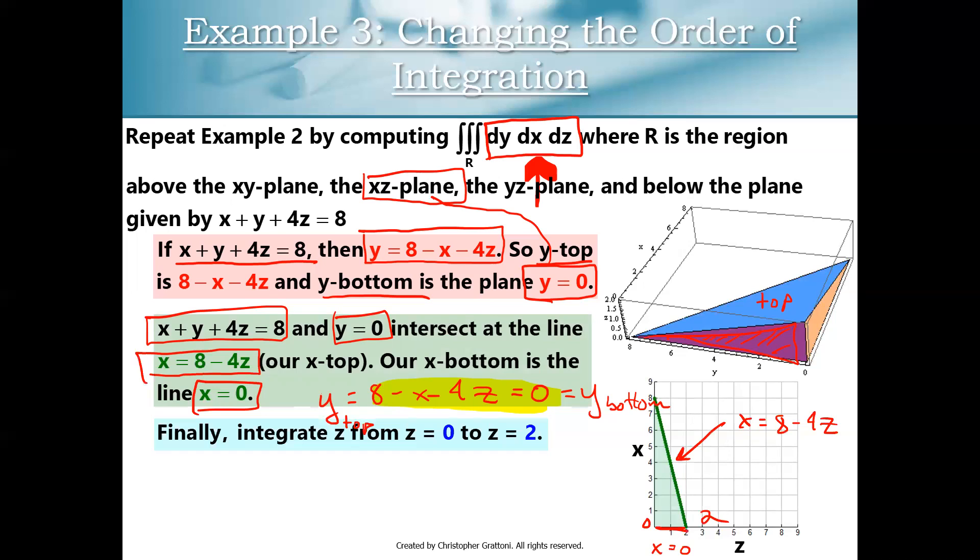We can also see that Z ranges from 0 to 2. So that's how we get our limits of integration. It's more geometric and algebraic than it is a calculus idea. You're really thinking about pictures and graphs. Now we have this integral set up. And if you crunch the numbers on it, you're going to get the same answer as the previous example, 64 over 3.